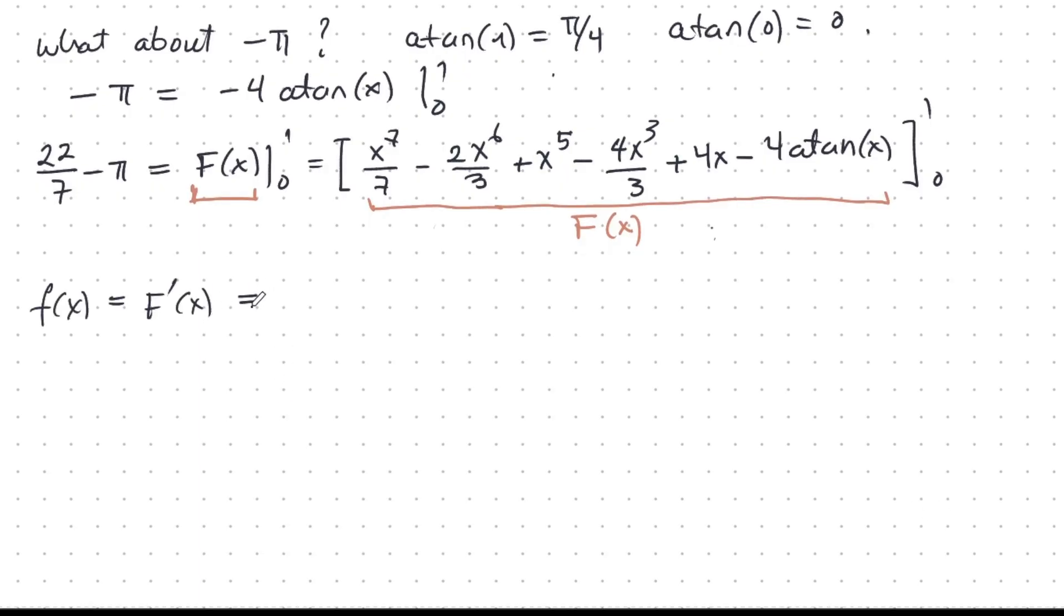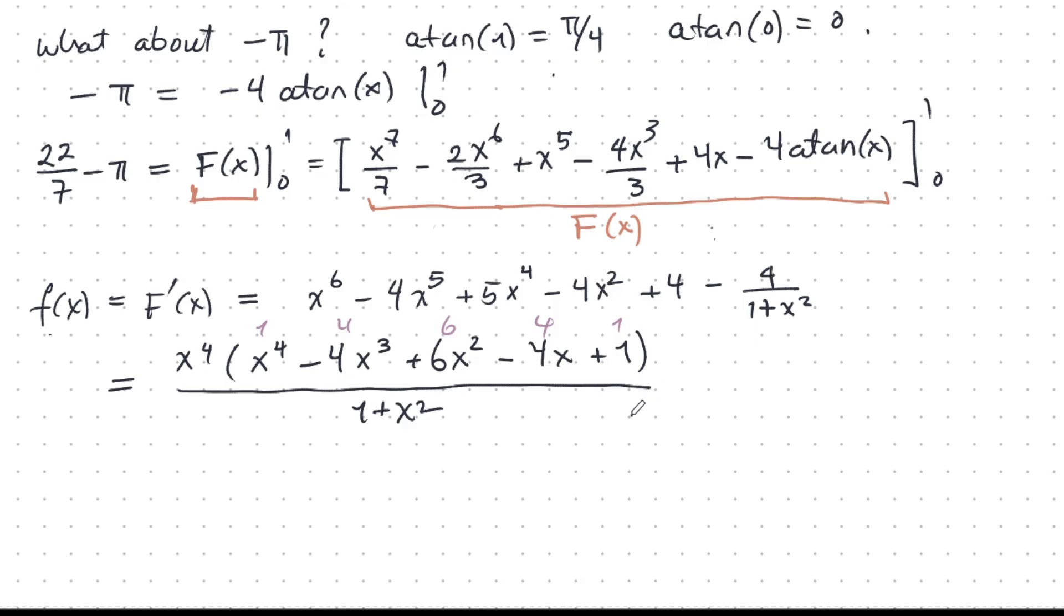The next thing we can do is recover our integrand function, little f, by differentiating this big F here. I get this. Don't forget that the derivative of arctan x is 1 over 1 plus x squared. Now, let's put everything on a common denominator. I get this, and I have factored out x power 4. Now, look at these coefficients. I have 1, 4, 6, 4, 1. So this is instantly factorizable. And I get this beautiful expression.